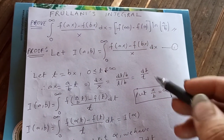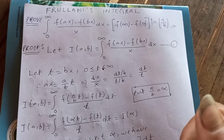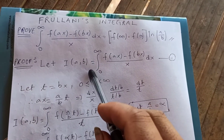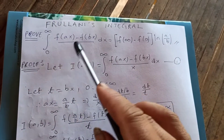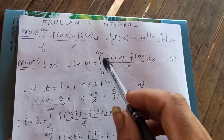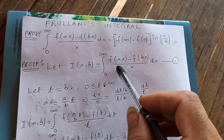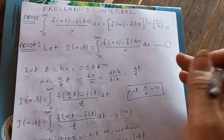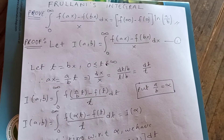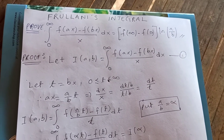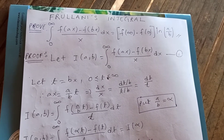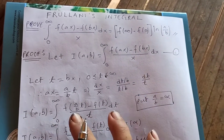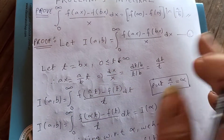Let our integral be I(a,b), where a and b are constants. So I(a,b) = integral from 0 to infinity of [f(ax) - f(bx)] / x dx — call this equation 1. We'll prove this, and do an example in the next video.